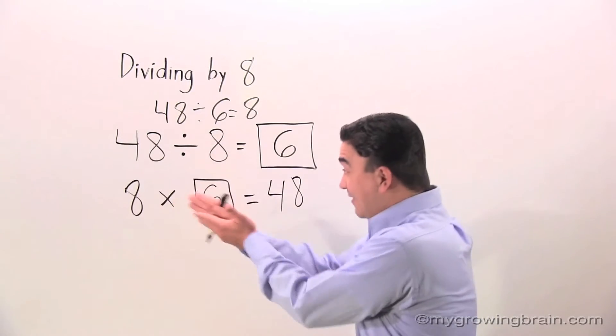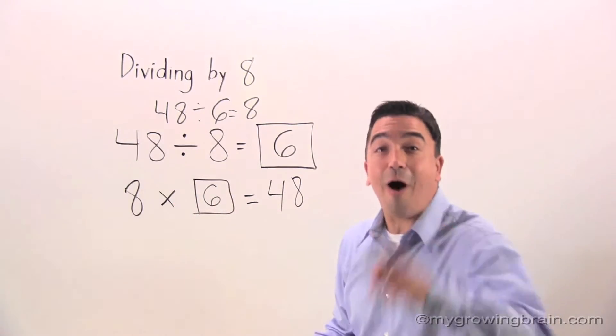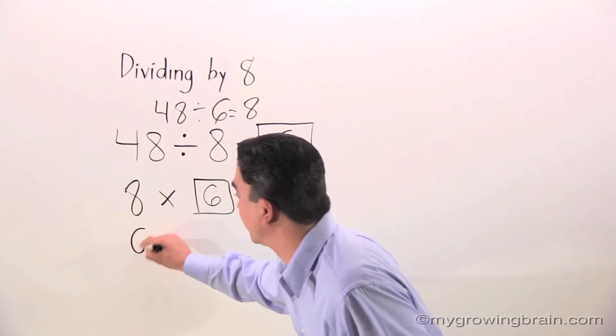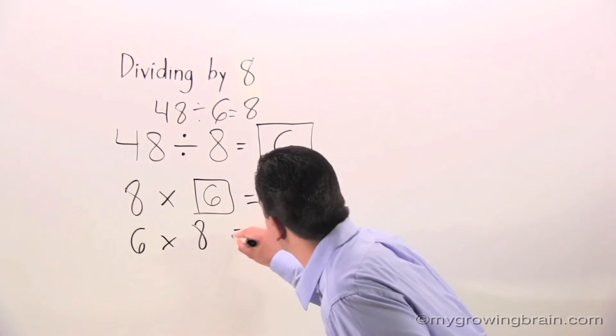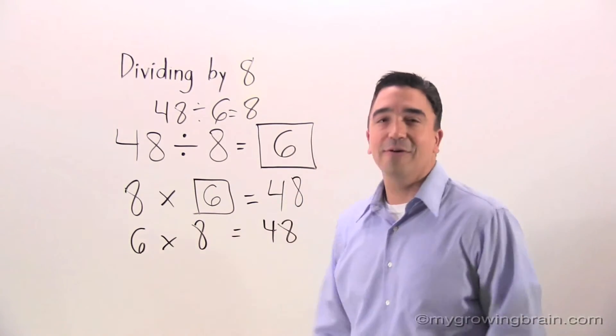And if 8 times 6 is equal to 48, we also know that 6 times 8 equals 48.